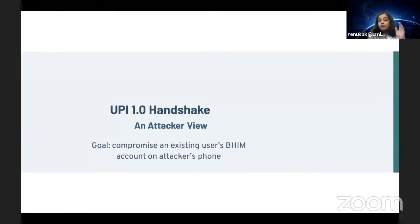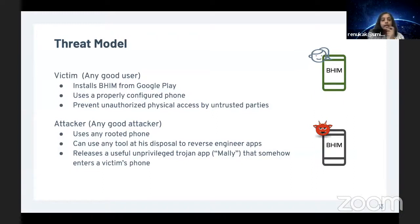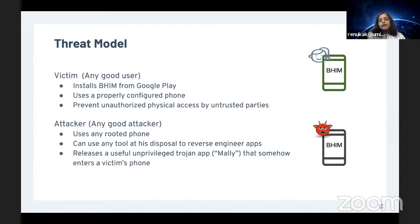In the next slides, we walk through the UPI 1.0 handshake from an attacker's perspective. The attacker's goal is to compromise an existing user's Bheem account on the attacker's device—an attack that equally works for new or non-users of UPI. We assume the attacker releases a useful but unprivileged Trojan app called 'Mali' that somehow makes its way onto the victim's phone, and the attacker uses a rooted phone and can reverse-engineer any of the apps.